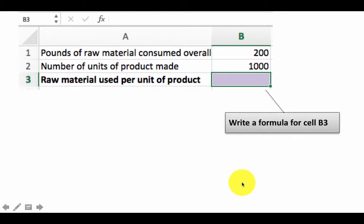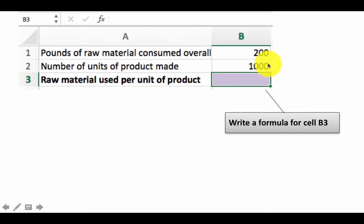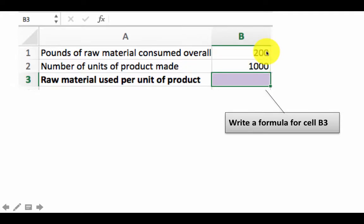Consider this problem: in some manufacturing facility, 200 pounds of raw material were consumed overall, and from those 200 pounds they made 1000 units of product. We want to compute the raw material used per unit. They made 1000 units and used 200 pounds, so per unit it's a division: B2 divided by B1. So 1000 units used up 200 pounds, meaning one unit uses 200 divided by 1000.